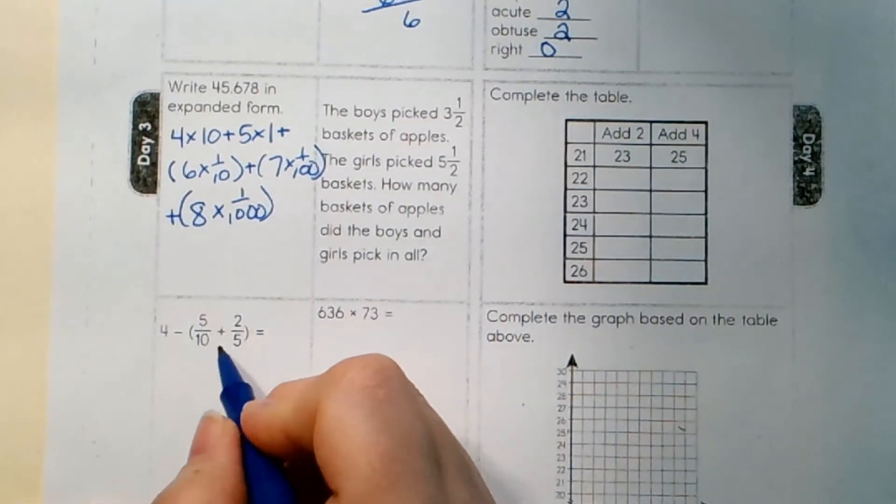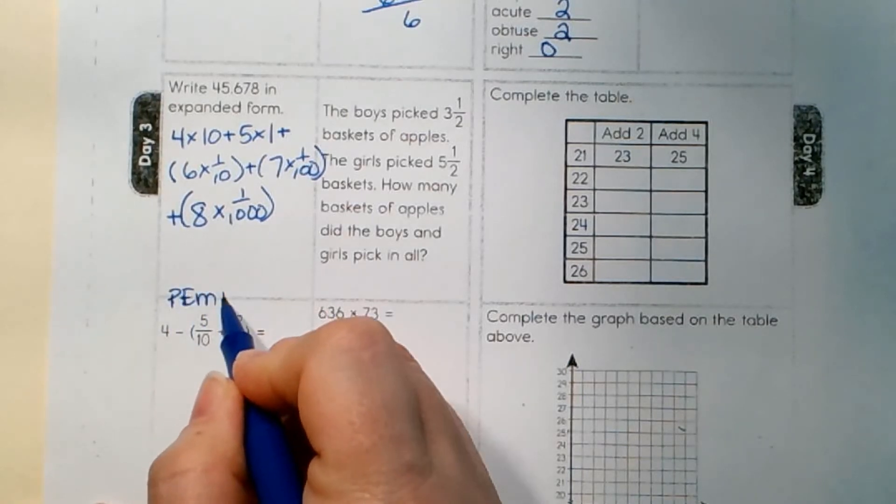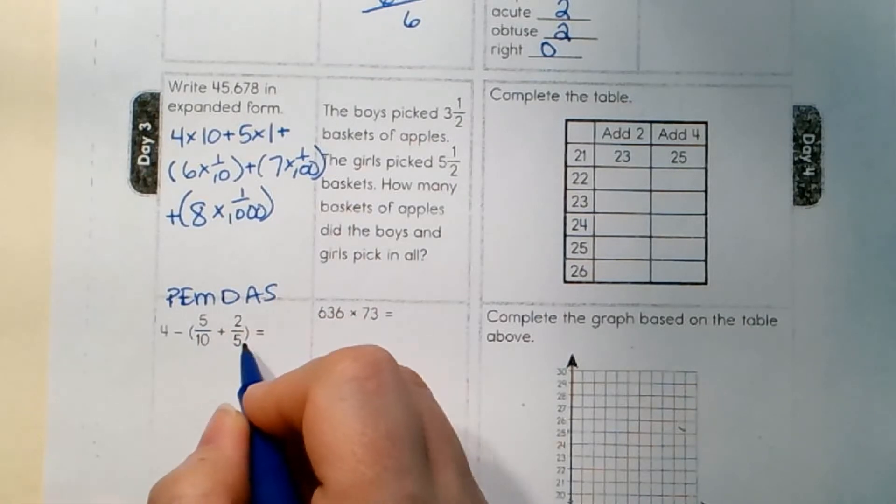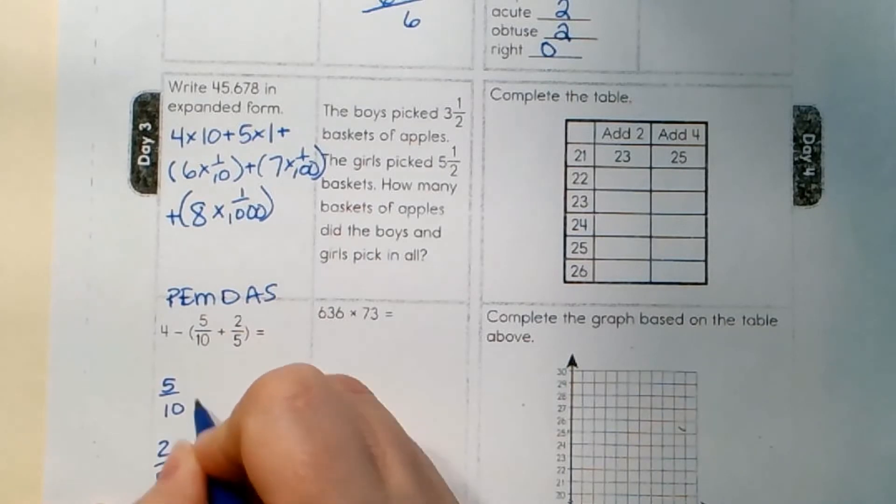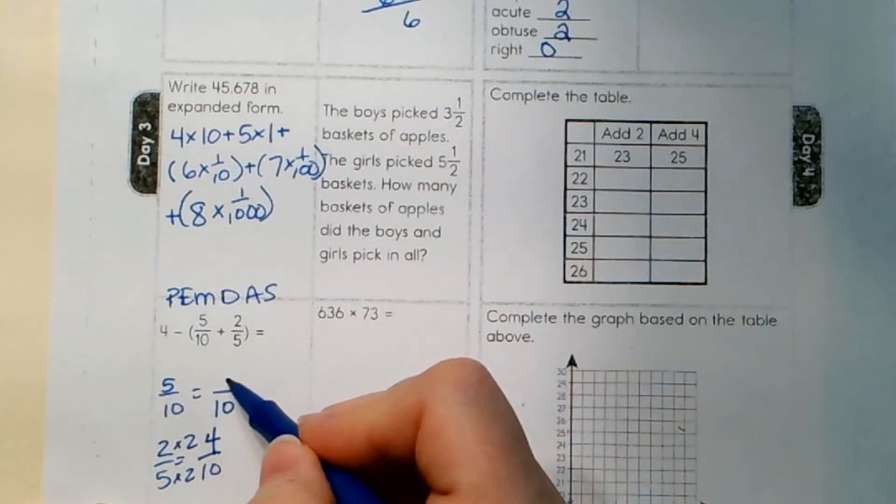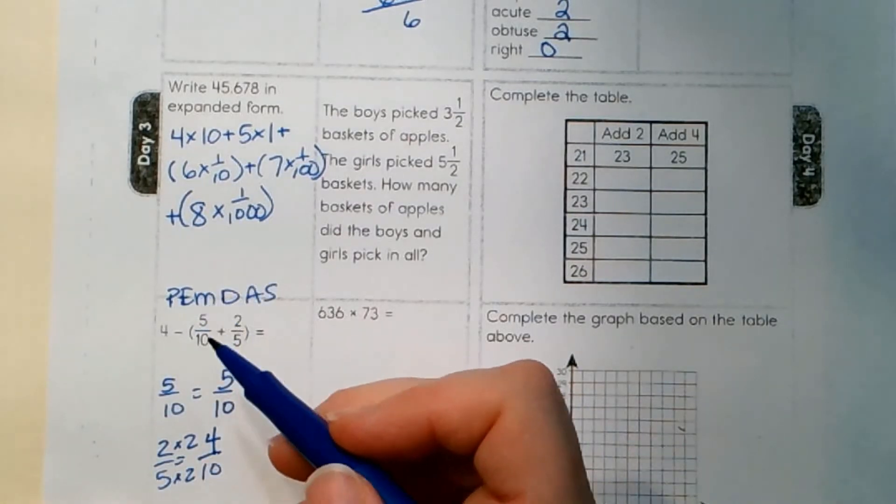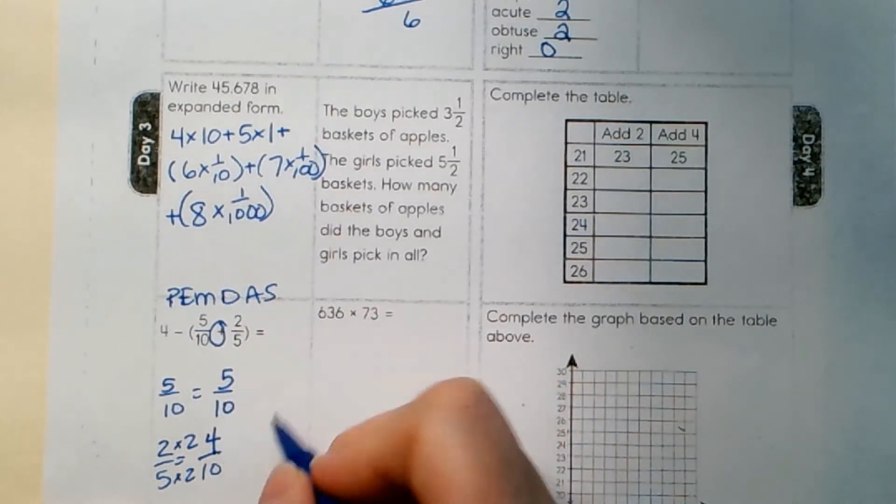4 minus 5 tenths plus 2 fifths in parentheses. PEMDAS tells us parentheses are first. Now, we can just add 5 tenths and 2 fifths to find a common denominator, which we know is 10. 5 tenths, 5 times 2, 2 times 2. This is going to stay the same because its denominator is already 10th. Now, remember we're adding, so 5 plus 4 is 9 tenths.